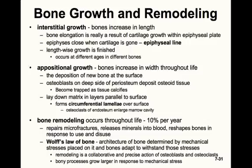Appositional growth is when we increase the bone's width throughout life, with constant deposition of new bone at the surface. Osteoblasts on the deep side of the periosteum deposit osteoid tissue, and cells become trapped as the tissue calcifies, laying down matrix in layers parallel to the surface — this is how we get development of the circumferential lamellae. At the same time, osteoclast activity on the endosteum constantly widens the marrow cavity in order to allow bone growth in width without making the bones overly heavy.